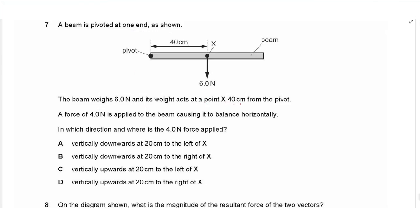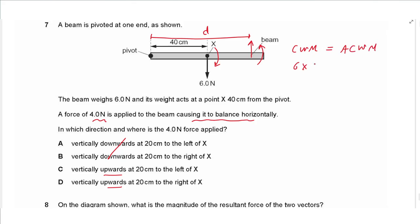Question 7: a beam is pivoted at one end. It weighs 6 N acting at point X, 40 cm from the pivot, and a force of 4 N is applied to balance it horizontally. The 6 N causes a clockwise moment, so we need an upward force creating an anti-clockwise moment, eliminating A and B. Using the principle of moments: 6 × 40 = 4 × d, giving d = 60 cm from the pivot, which is 20 cm to the right of X, so the answer is D.